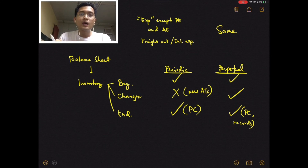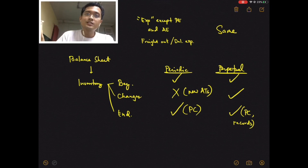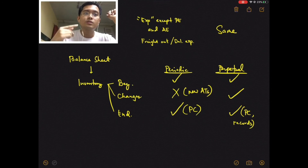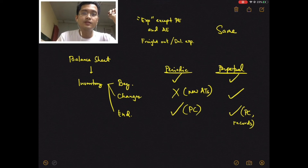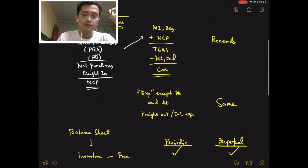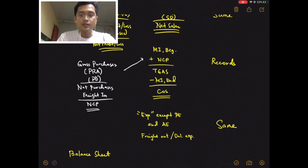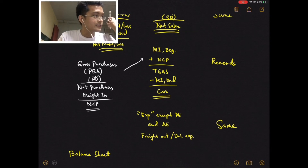Hopefully I was able to set a good transition from the journal entries to the financial statements. In the next recording, I will talk again about the income statement for merchandising businesses, but I will be including computations for the notes — so it's much more in-depth than this one. My intention here was just to give you an overview, and I've already given you the formula for cost of sales, which I'll repeat again when I discuss the specific statement.